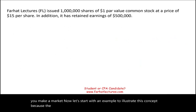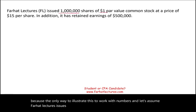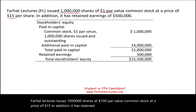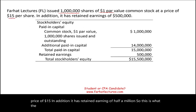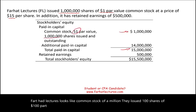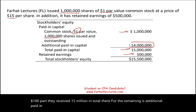Let's work with an example using numbers. Assume Forehead Lectures issued one million shares at $1 par value common stock at a price of $15, and has retained earnings of $500,000. The equity section shows common stock of $1 million, additional paid-in capital of $14 million, and retained earnings of $500,000 — total stockholders' equity of $15.5 million.